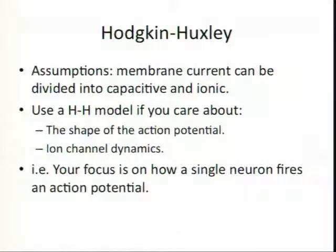The assumptions of the Hodgkin-Huxley model, membrane current can be divided into capacitive and ionic. You use a Hodgkin-Huxley model if you care about the shape of the action potential. So the ion channel dynamics, what are the channel densities? Is there more sodium channels than potassium channels? So your focus is on how a single neuron fires in action potential. But our question was really, how do electric fields play around with synchrony in a population of neurons? So we probably want, we're looking at synchrony. We want to be able to model a bunch of neurons together. We also want how do the electric fields play in? So we probably want something that is distributed in space so we can get the electric fields playing around with the dendritic arbor versus the soma. So this is probably not the appropriate model for us to use.